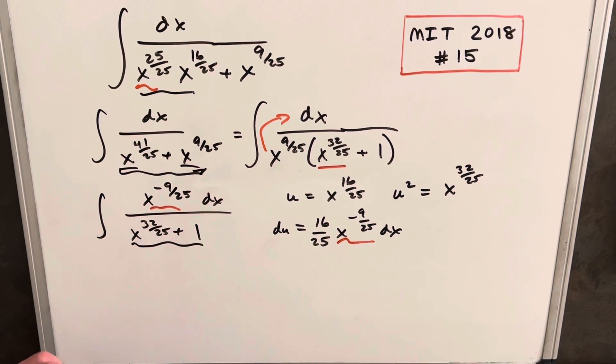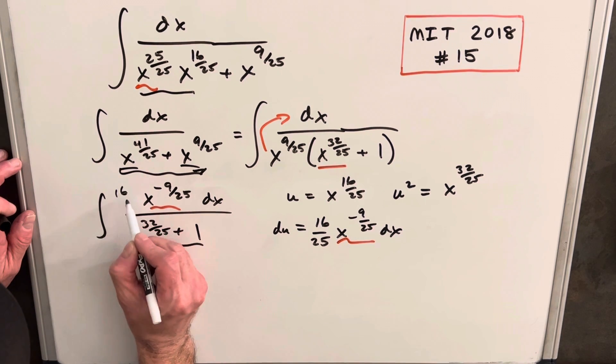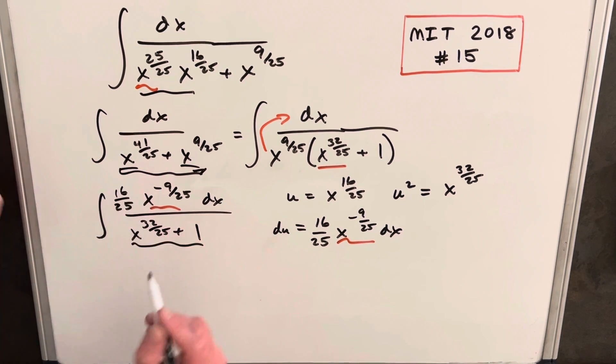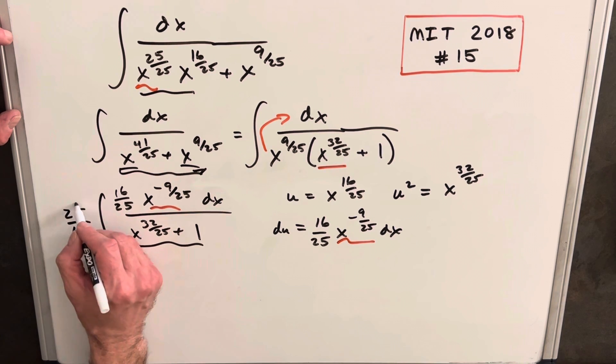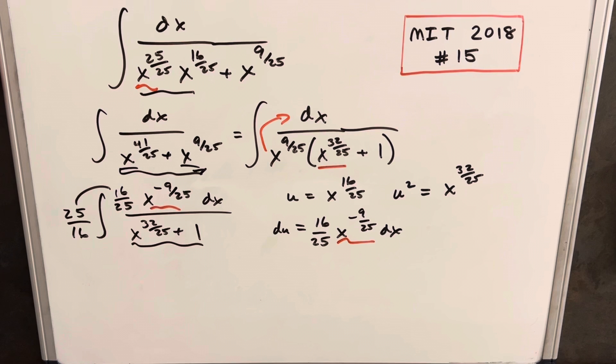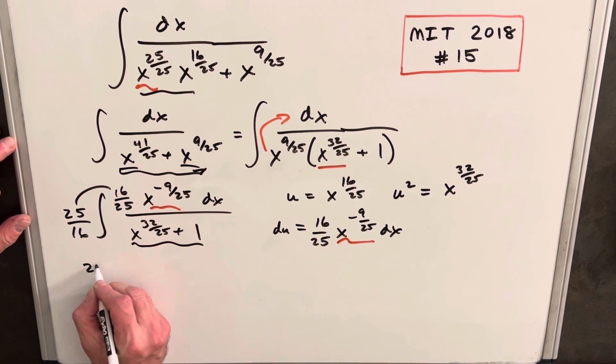I'm just going to make a small correction. We'll put a 16 over 25 here and I'm just going to put a 25 over 16 over here, just noticing that we multiply this together we're just multiplying by 1. So then we're ready to make our substitution.